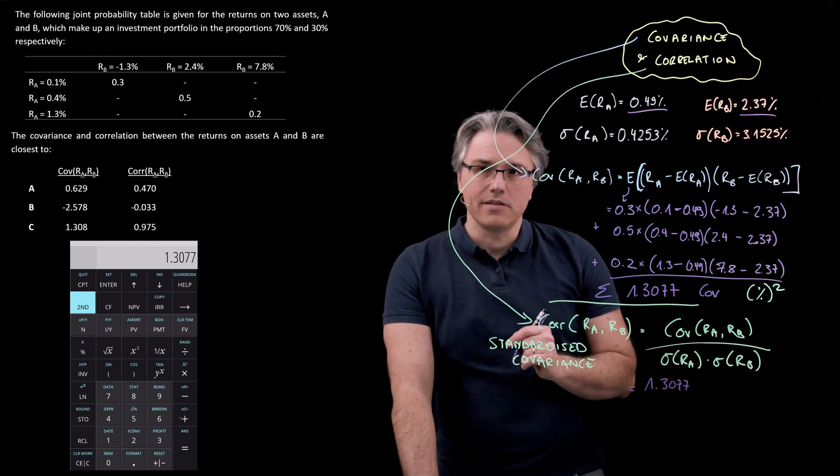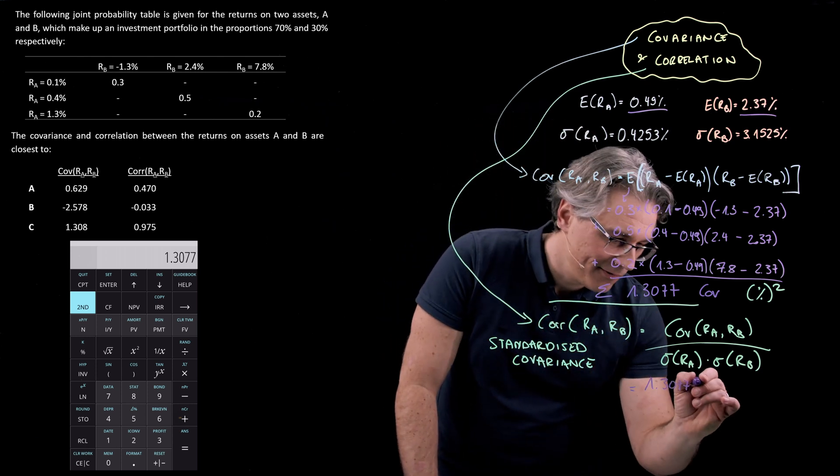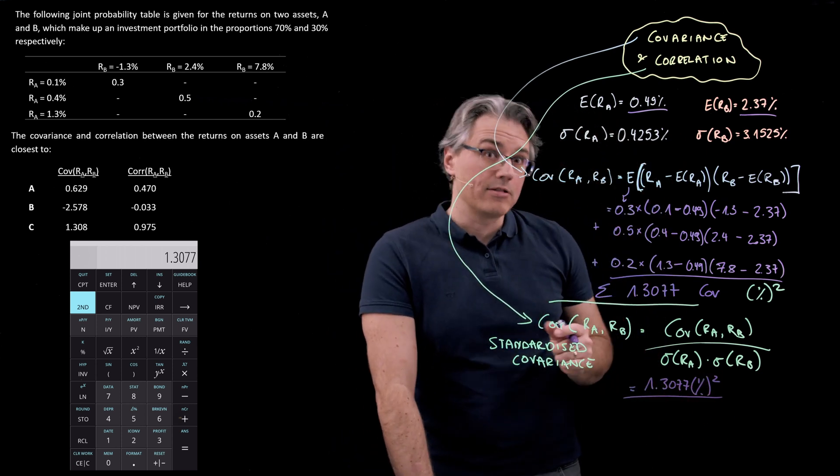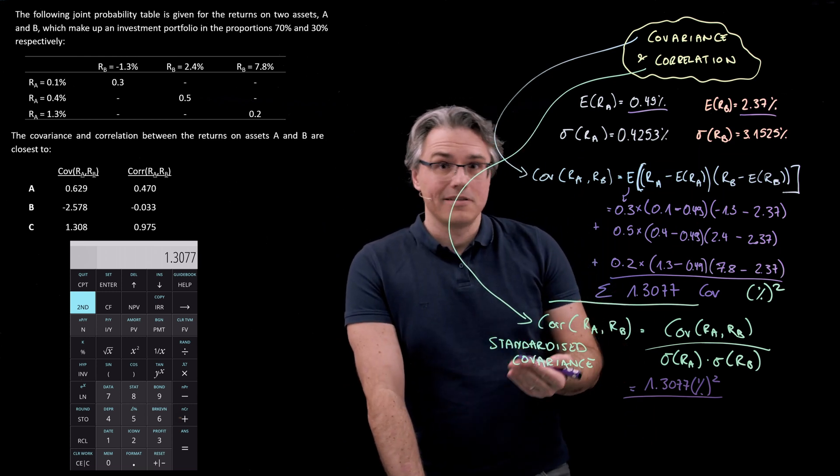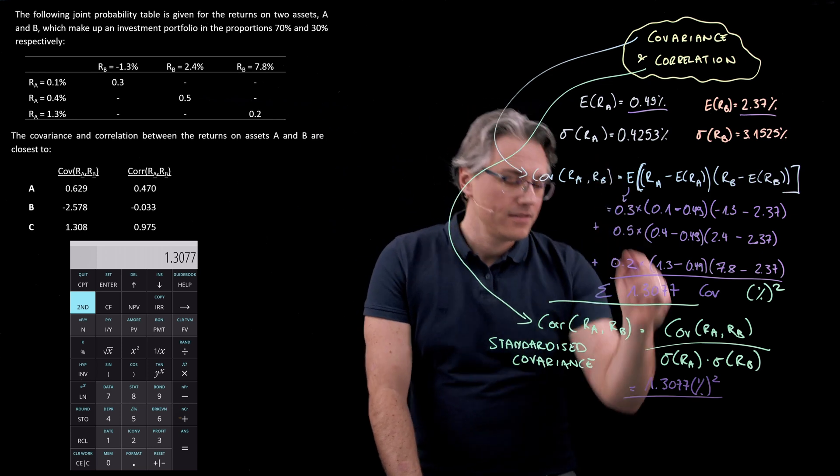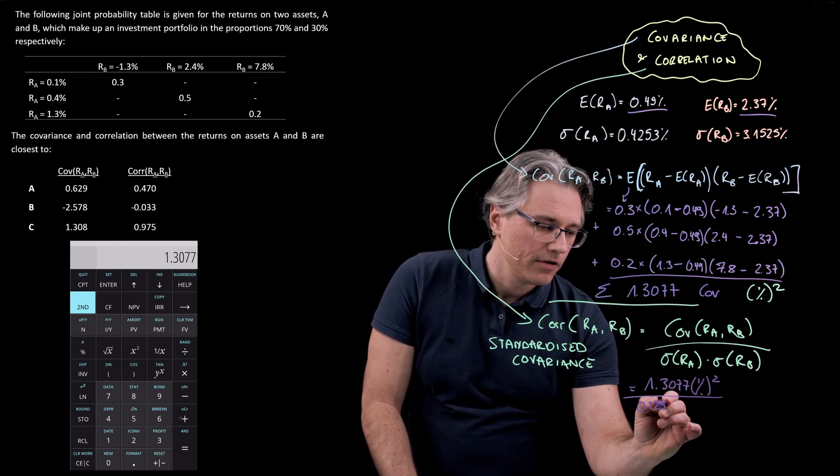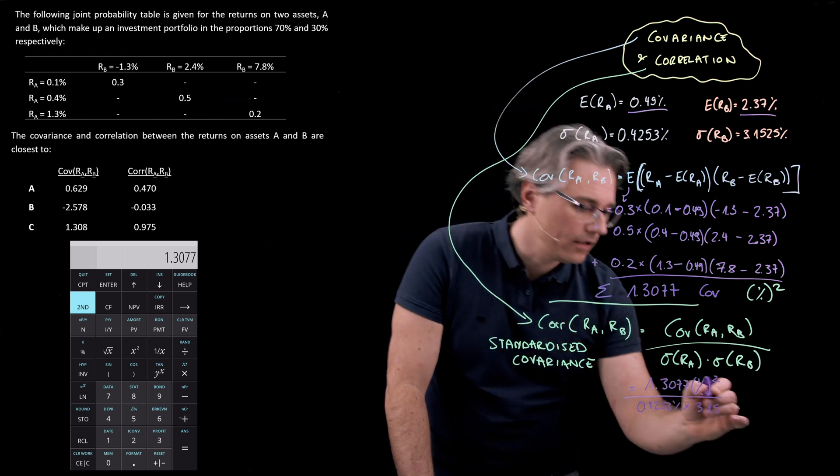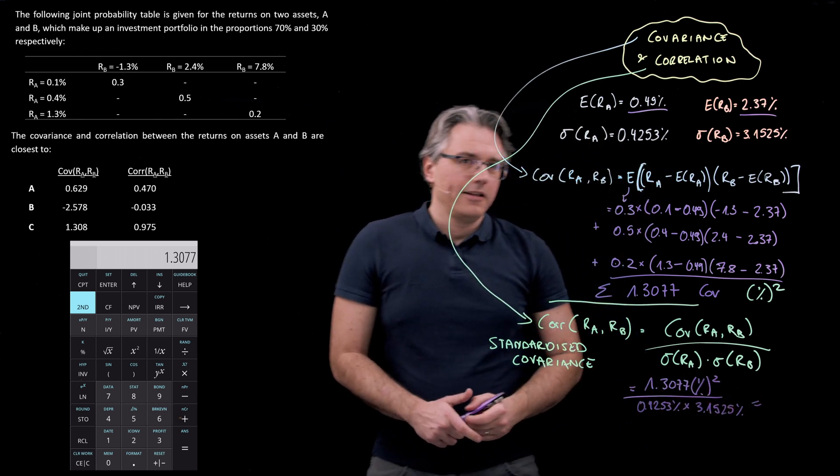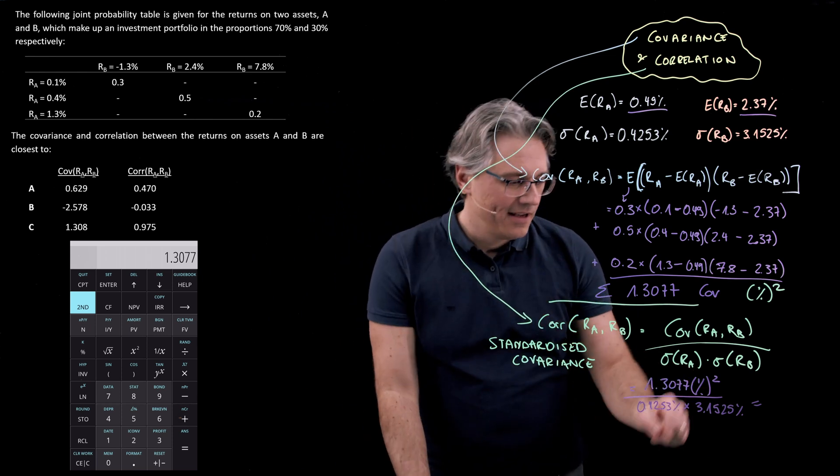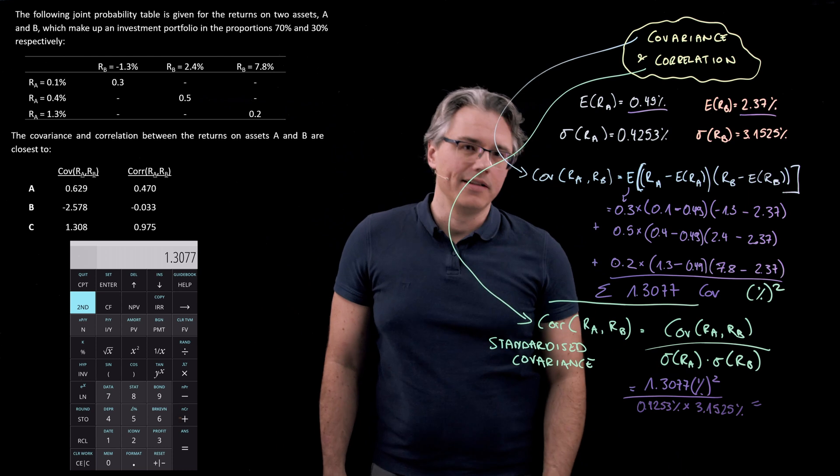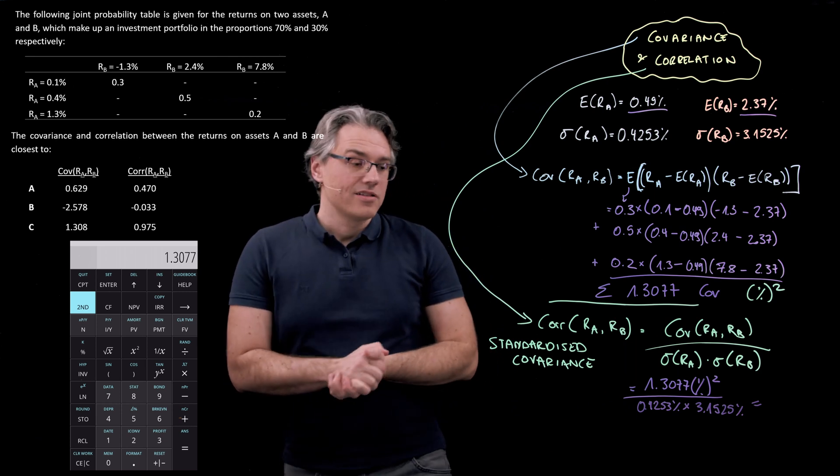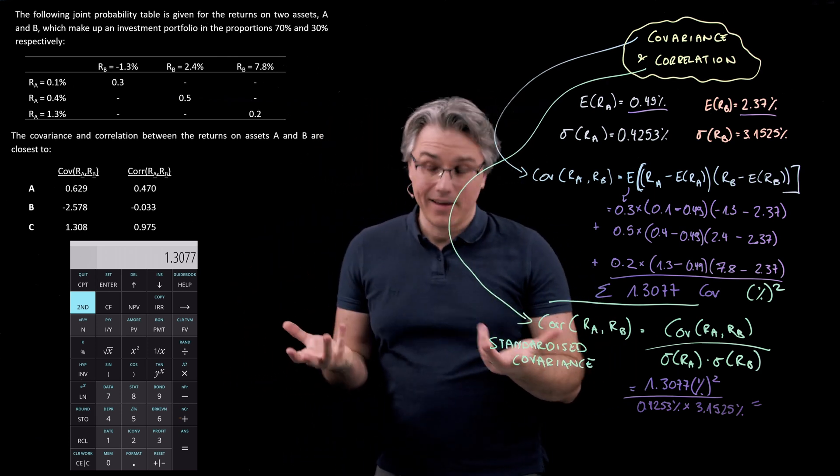If we plug these numbers into our formula here, we get the 1.3077 coming from covariance. And I'm actually going to input the signs as well this time because I want you to be aware of something very interesting which happens here. Covariance was expressed in percentages squared, whereas standard deviations alone are expressed always in just simply the units which we are actually expressing the variable in. So this is in percent, 0.4253% multiplied by 3.1525%. It's very easy to notice that as a result of having percent squared here and percent times percent in the denominator of the fraction, you're actually going to get units which cancel each other out. So correlation will be expressed without any units as such.